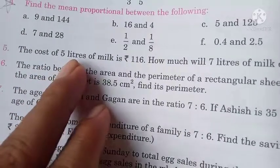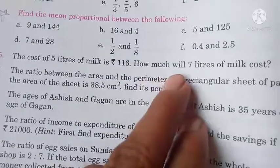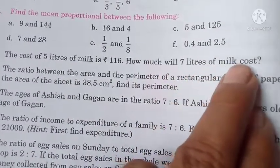The cost of 5 liters of milk is rupees 116. How much will 7 liters of milk cost?